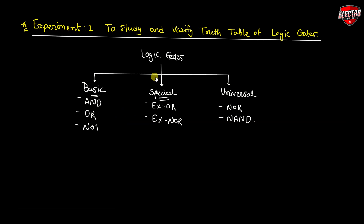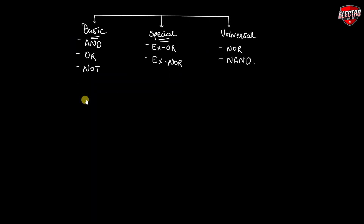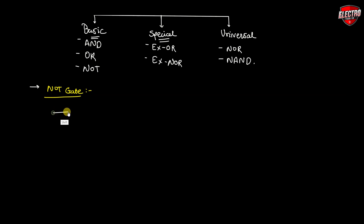First, let us start with the truth table of logic gates. The first gate is the basic gate — NOT gate. As we discussed earlier, the symbol of the NOT gate is like this.